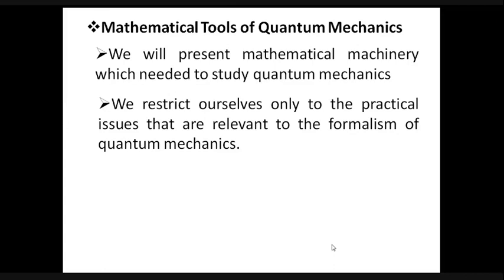Everyone knows that in quantum mechanics we can't neglect classical mechanics, because classical physics served us pretty well for quite a while. However, experimental results related to the double-slit experiment or the photoelectric effect didn't match up well with the known understanding at the time, because Newtonian physics or classical physics were not able to explain these experiments. So people thought that they had to develop a new theory, and then they started formulating quantum mechanics.